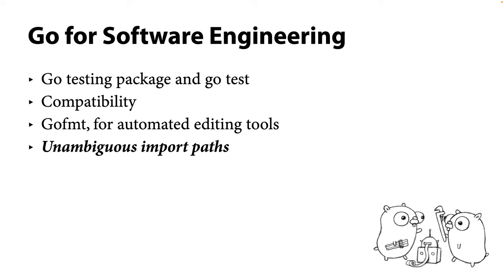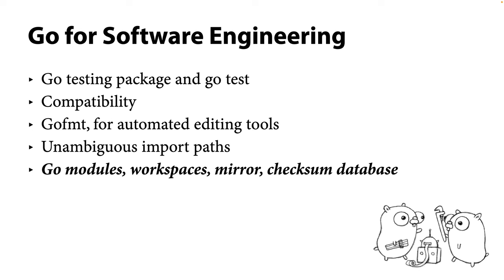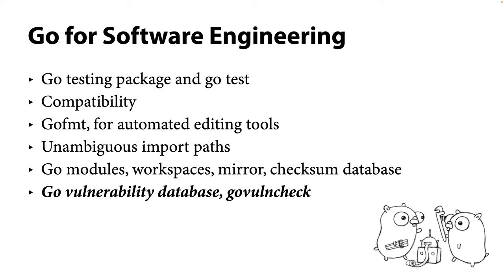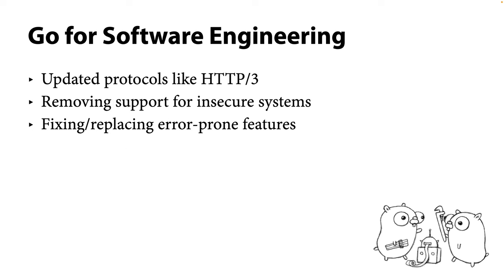When you use packages that other people provide, a stumbling block is that multiple people write packages with the same names, like SQLite or YAML. Go's import paths are URLs to answer that question in a decentralized, unambiguous way. As time goes on, the next problems are picking which version of a package to use — which is why Go provides modules, workspaces, the Go module mirror, and the Go checksum database. We also added the Go vulnerability database and GoVulnCheck to help find security bugs.